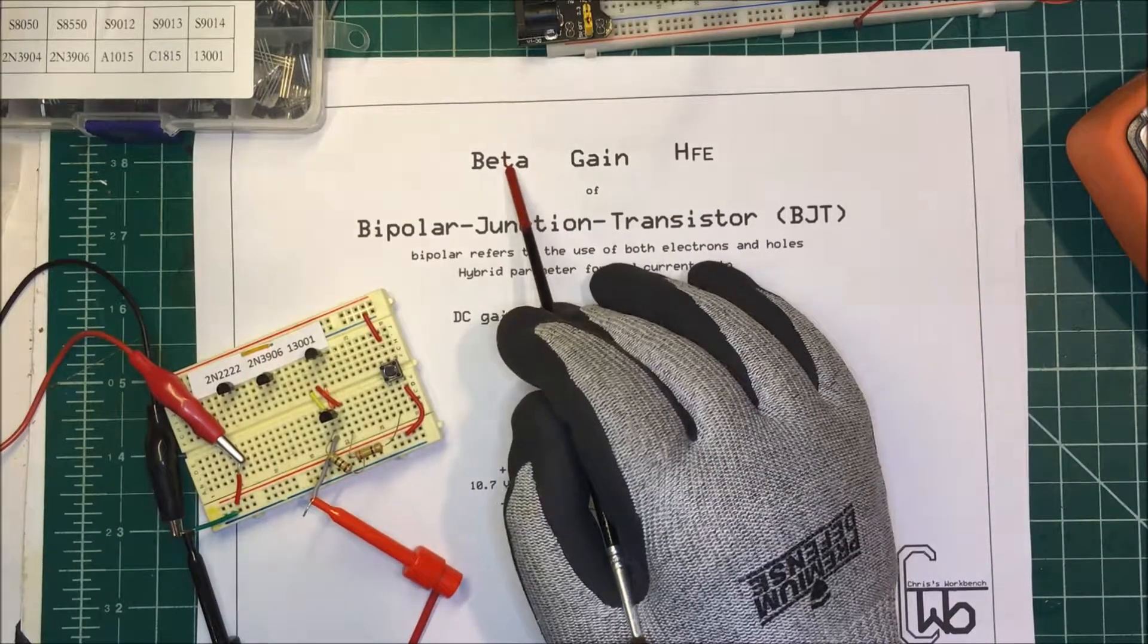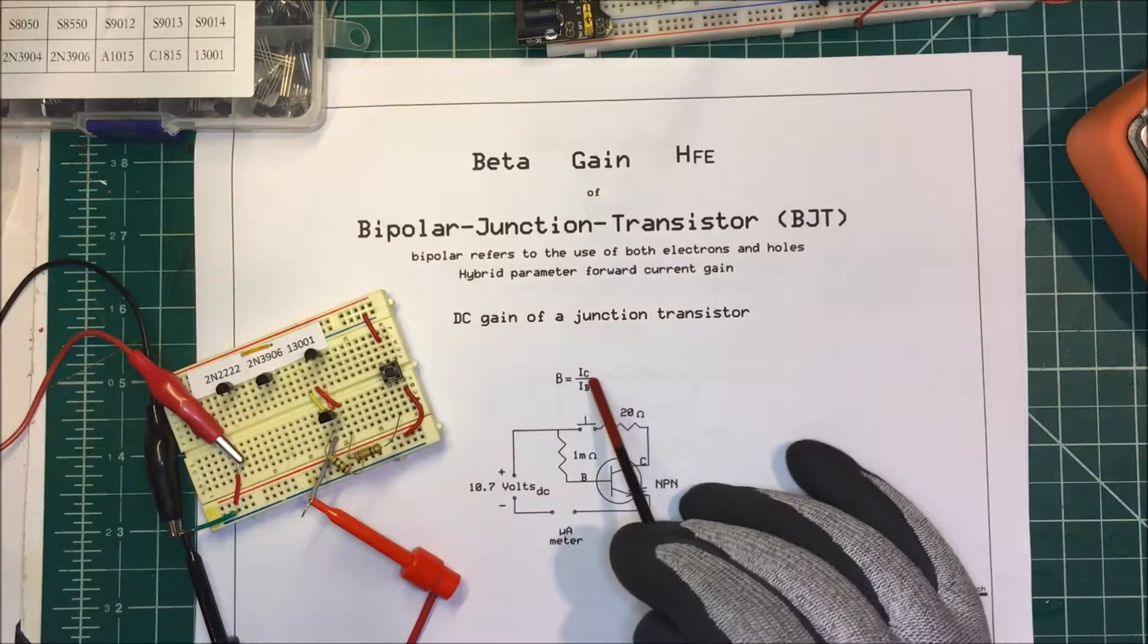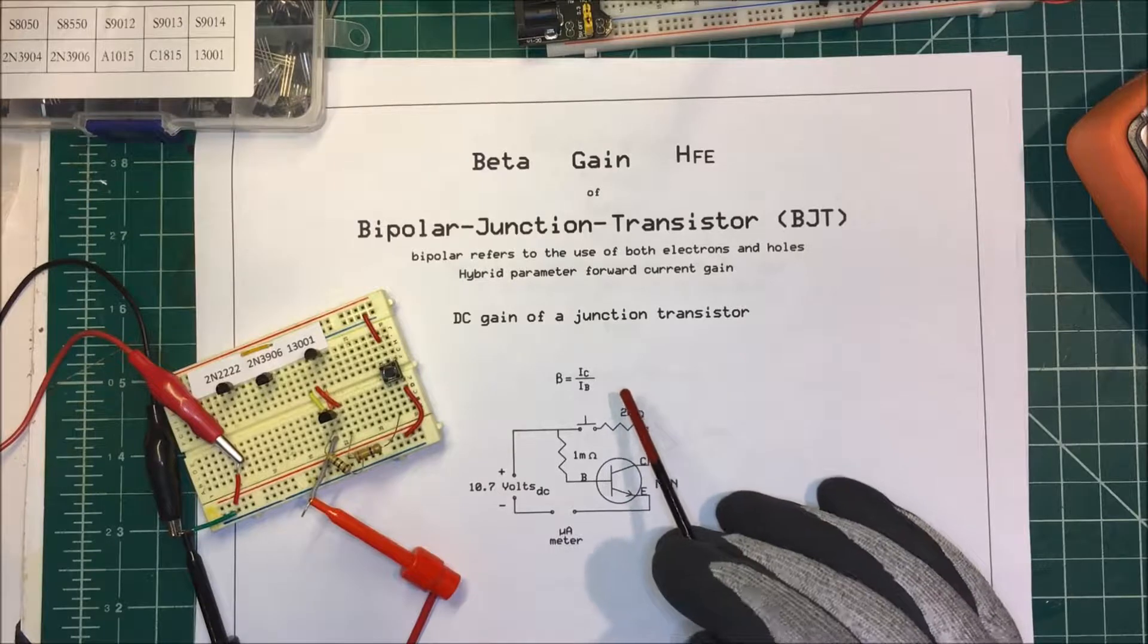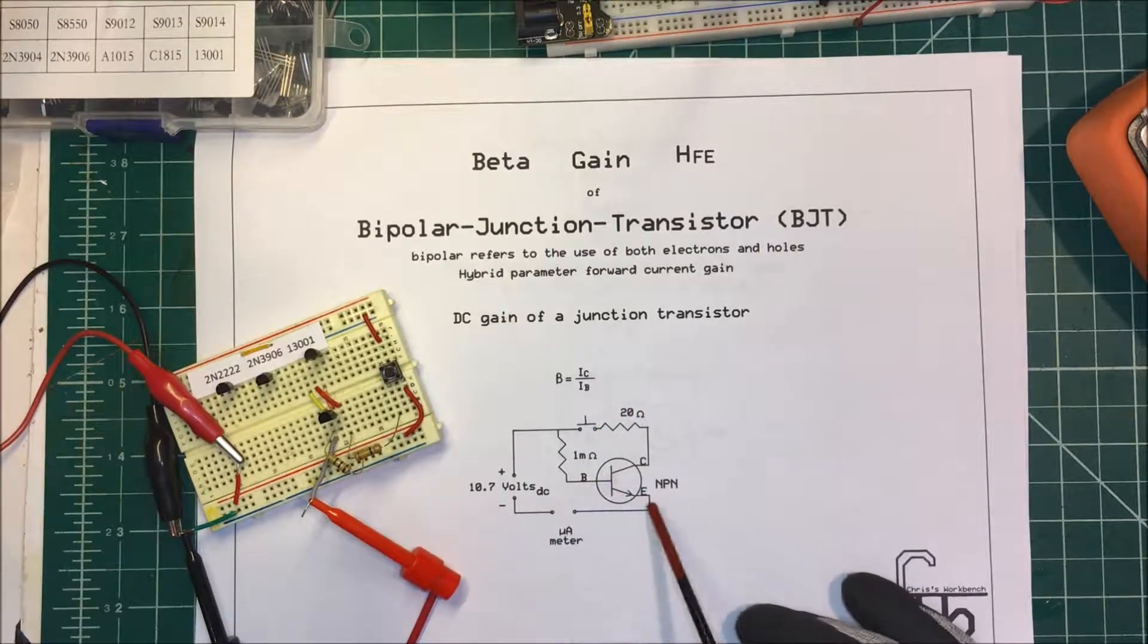Most of the time I refer to it as beta. It's a DC gain and we measure it with this formula here: it's the current from the collector to the emitter divided by the current from the base to the emitter.